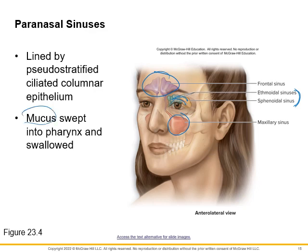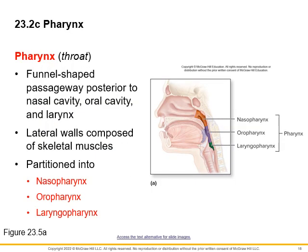The pharynx is broken into three distinct structures. The nasopharynx is behind the nasal cavity. The oropharynx is behind the mouth or oral cavity. And the laryngopharynx is behind the larynx.